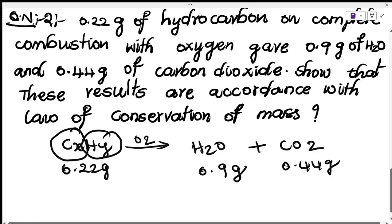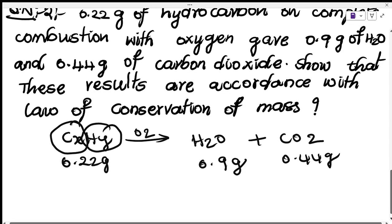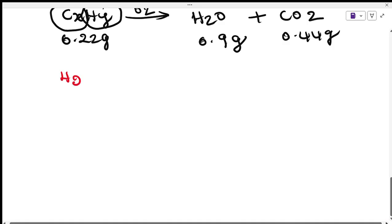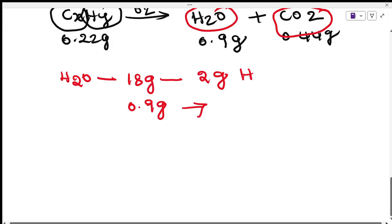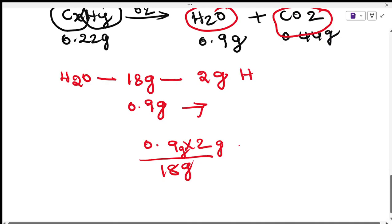We don't know how much carbon or hydrogen is present, so we follow the second approach. First, calculate hydrogen mass from water: H2O has a molecular weight of 18 grams, in which 2 grams is hydrogen. Using the unitary method: 0.9 grams of water contains 2 divided by 18 times 0.9, giving 0.10 grams of hydrogen.